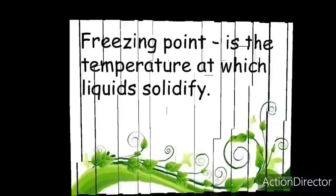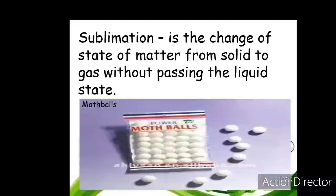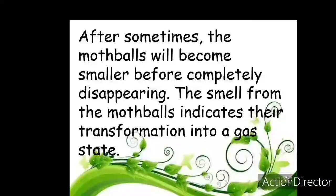The next process is sublimation. Sublimation is the change of state of matter from solid to gas without passing through the liquid state. For example, moth balls — naphthalene balls, the white colored balls your mothers keep in clothes in the cupboard. When she packs winter clothing, she puts in moth balls. When you see them later, they have turned into very small balls or completely disappeared. They have sublimed — turned into the gaseous state without turning into liquid. The smell indicates that the transformation has taken place.